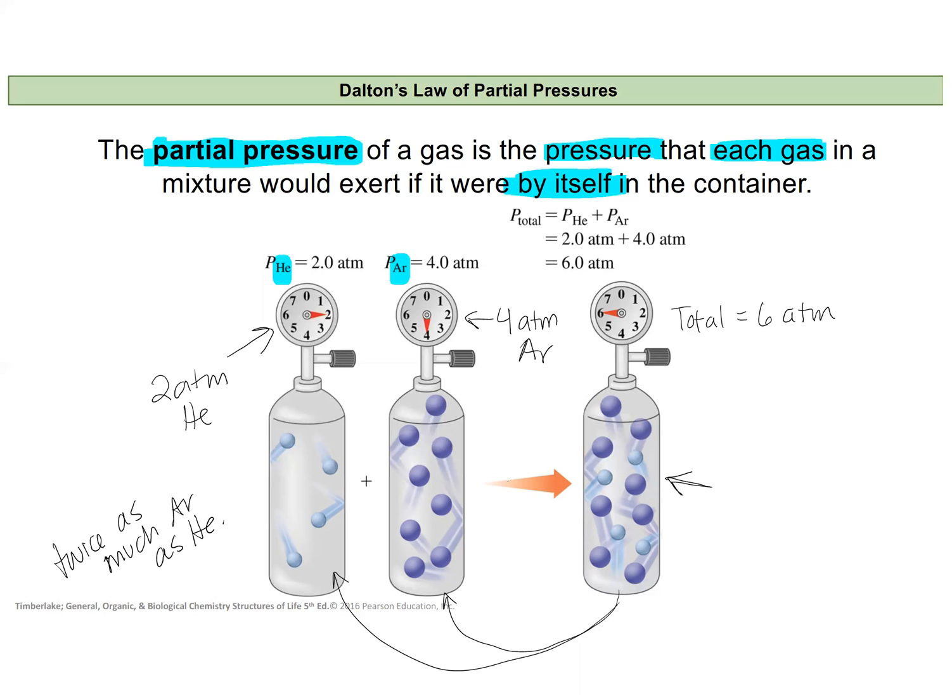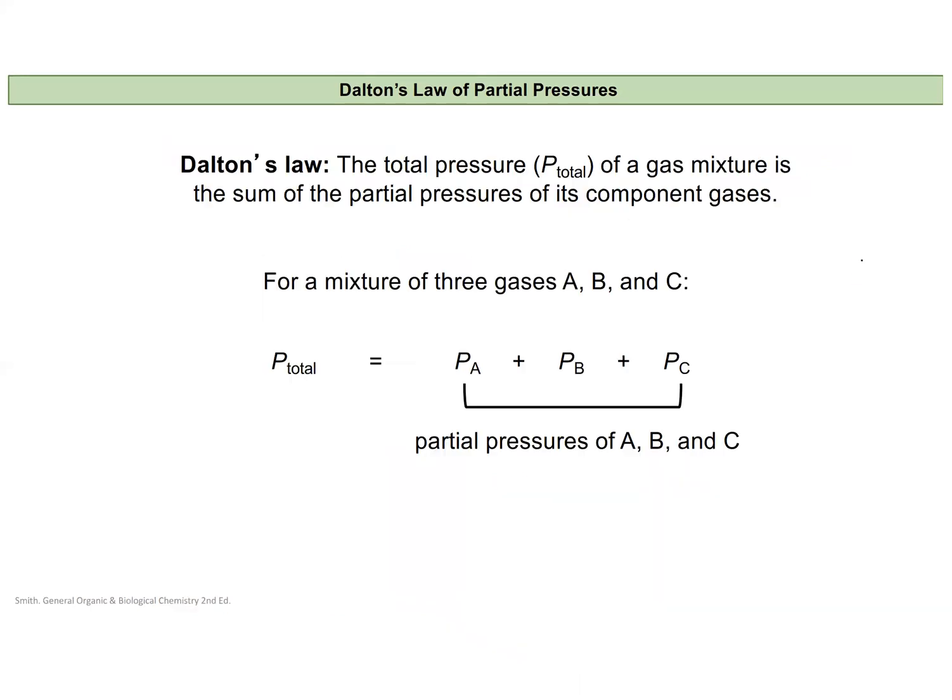We can make this actually an equation that the total pressure is equal to the sum of the partial pressures. So if I had a mixture of three gases A, B, and C, it would be the pressure of the first gas A plus the pressure of B plus the pressure of C in that one container all added together to give me a total pressure.